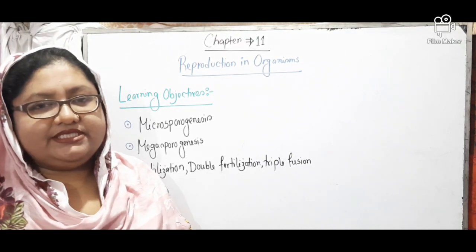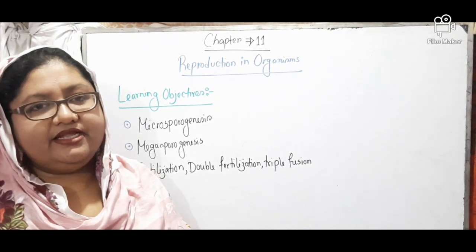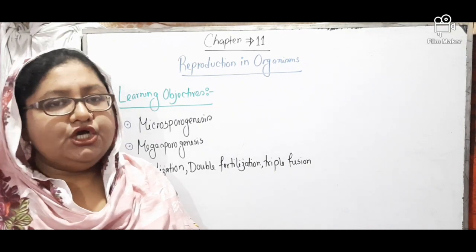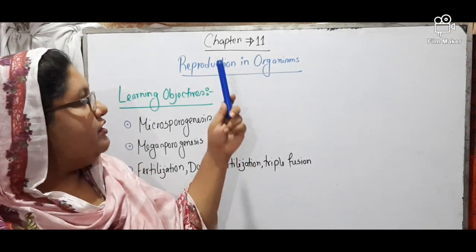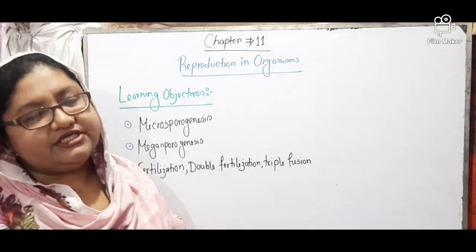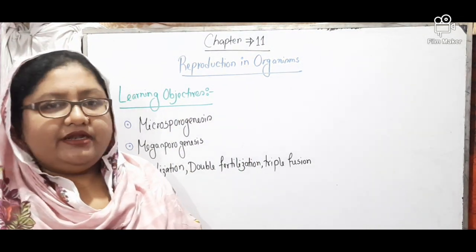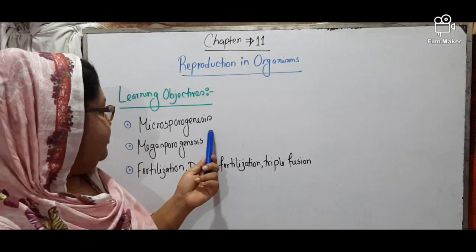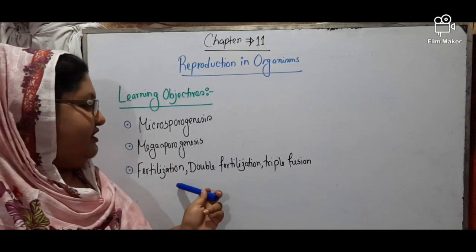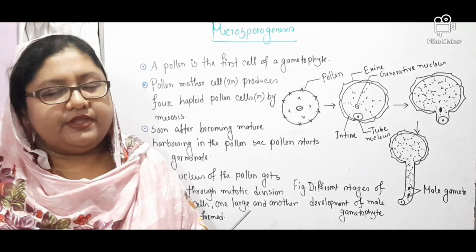Welcome back, students. This is Mahabasul Tonaki, Senior, from H.O.M.I.D.S. College, Department of Buddhism. Today I will discuss Chapter 11, whose name is Reproduction in Organisms. My learning objectives are Microsporogenesis, Megasporogenesis, Fertilization, Double Fertilization, and Triple Fusion.